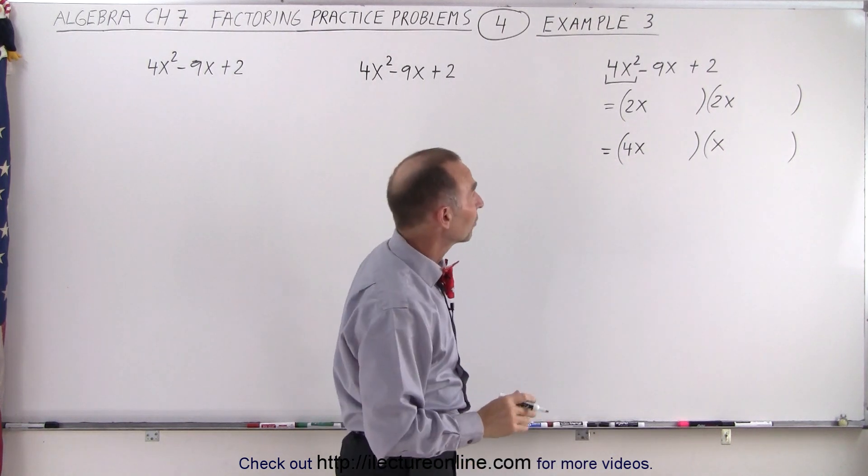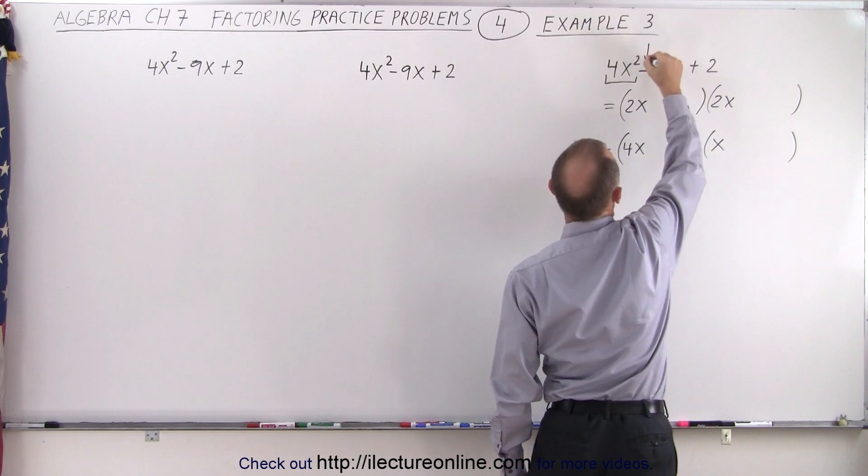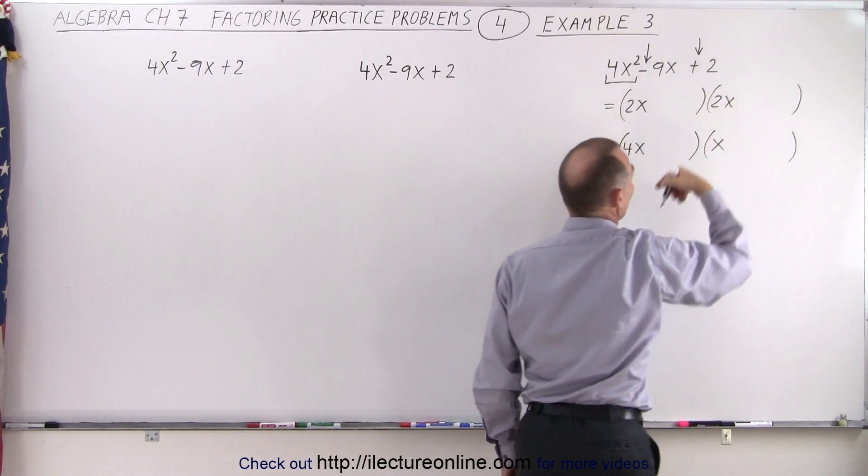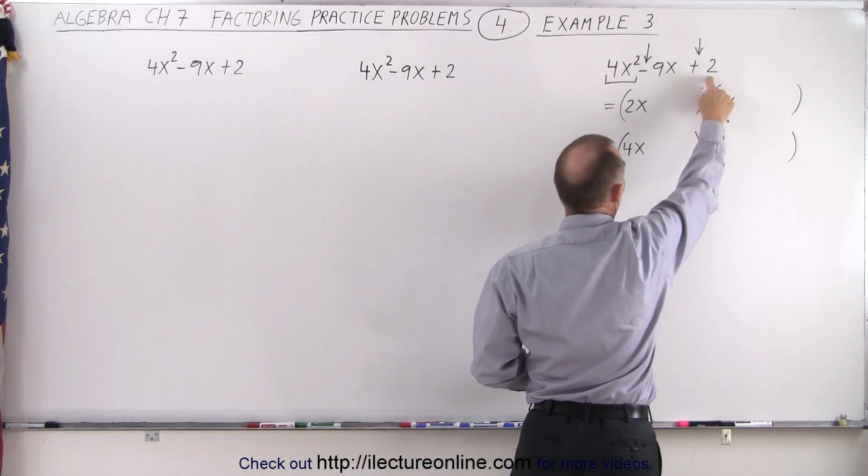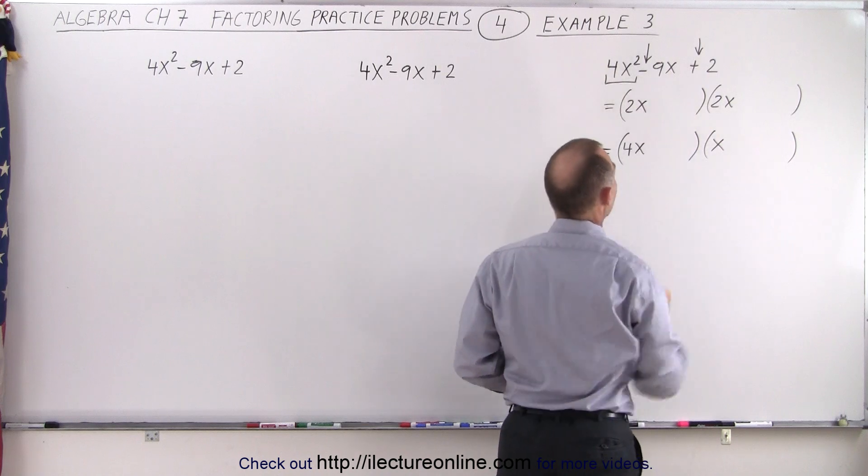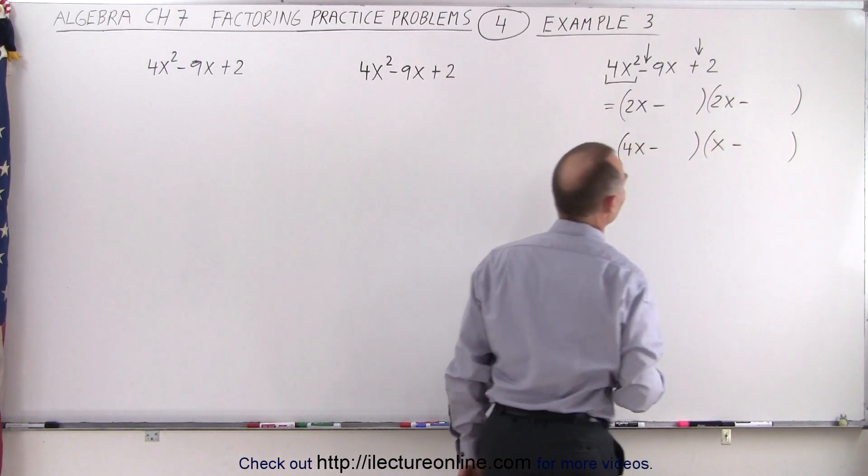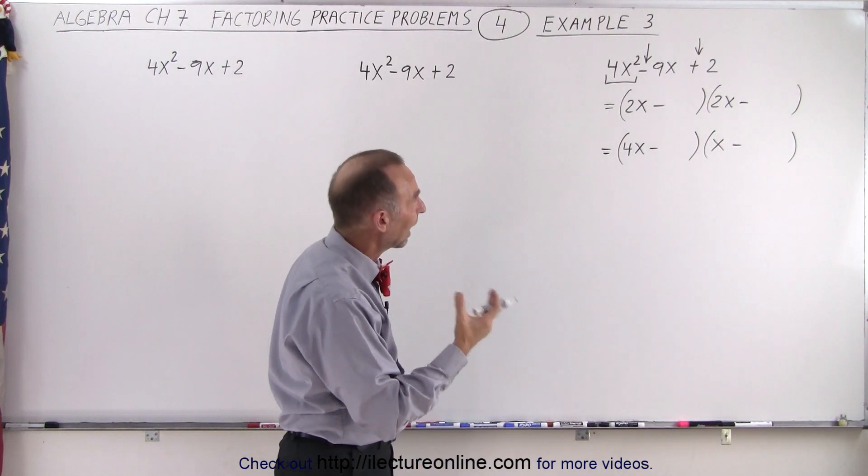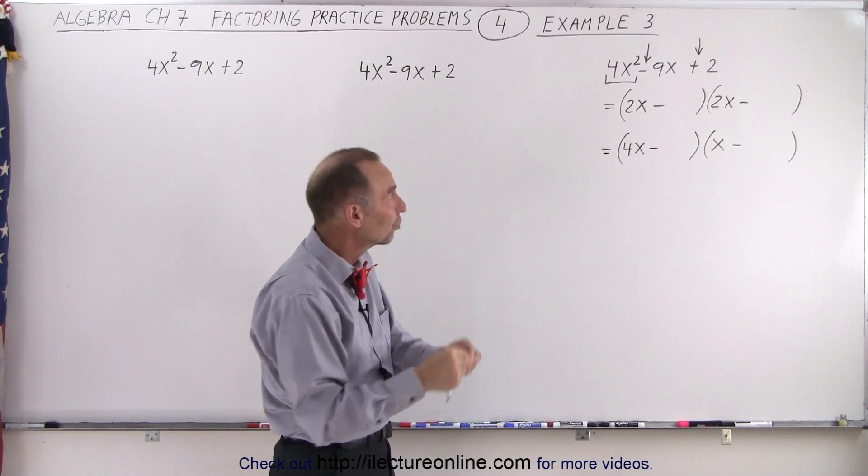Next, we're looking at the signs. Notice if the middle term is negative and the last term is positive, that means that both of these must be negative because when we multiply two negative numbers together, we get a positive third term. And when we add them together, we get a negative middle term. So we know we're going to need negative signs. Now, what about the last term, 2? The only way to get 2 is to multiply 1 times 2.